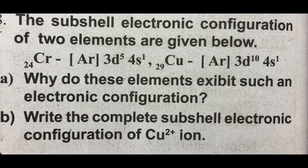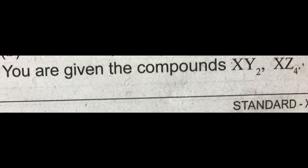Question number 4: The subshell electronic configuration of two elements are given below. Question A: Why do these elements exhibit such an electronic configuration? Question B: Write the complete sub-shell electronic configuration of the Cu2+ ion. Cu has the configuration Ar 3D10 4S1, so for Cu2+ ion you remove electrons accordingly.